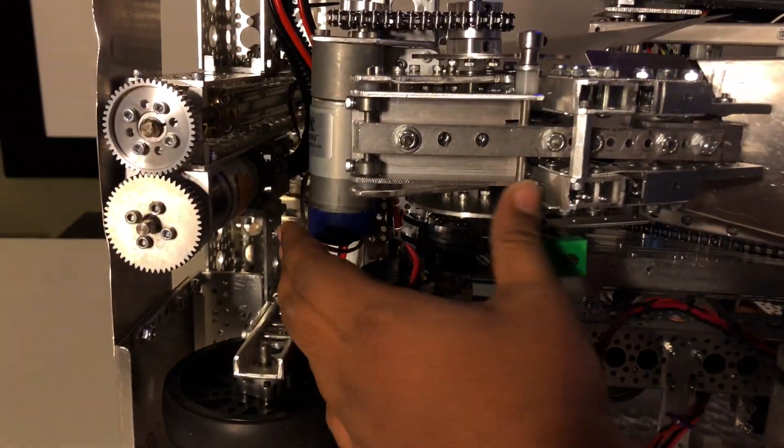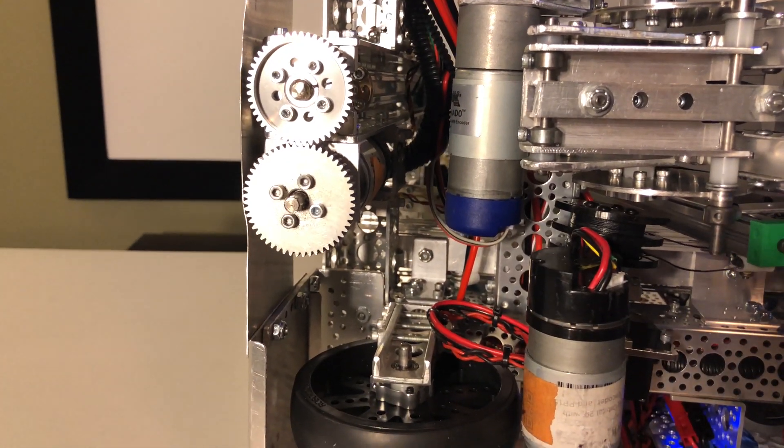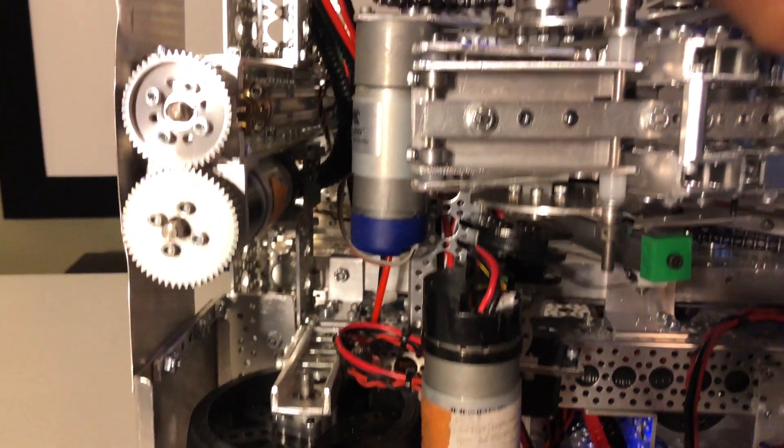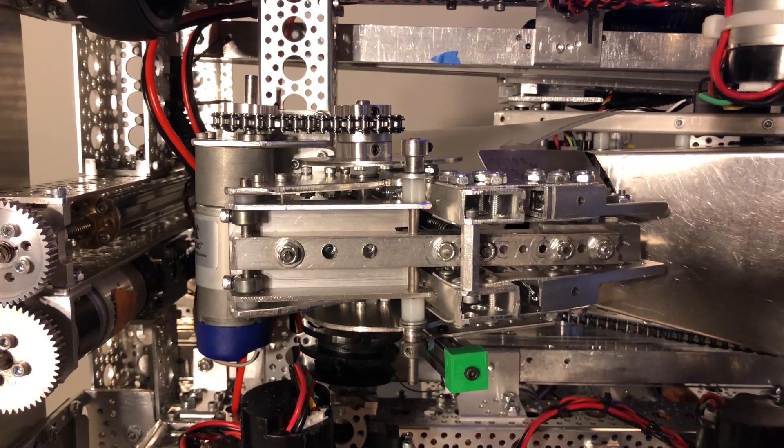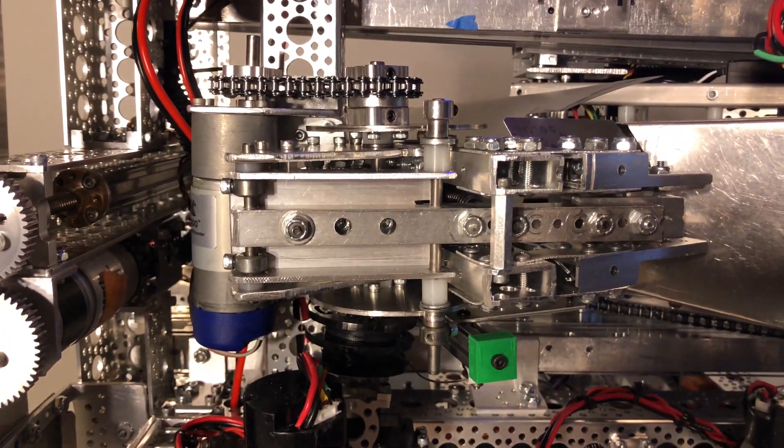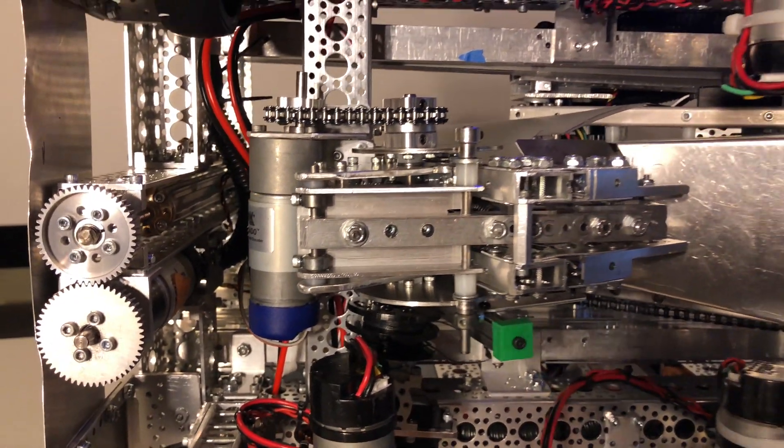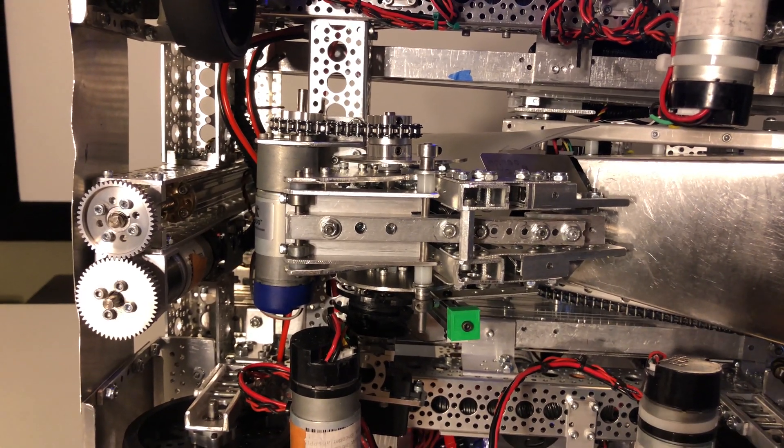Over here, the way we've powered it is we've actually used a Torknado, or a 60 to 1 motor, with a 1 to 1 chain ratio. And that way, we're able to sort of combine the consistency of the pop with the speed we really want, as you saw in the previous part of this video.